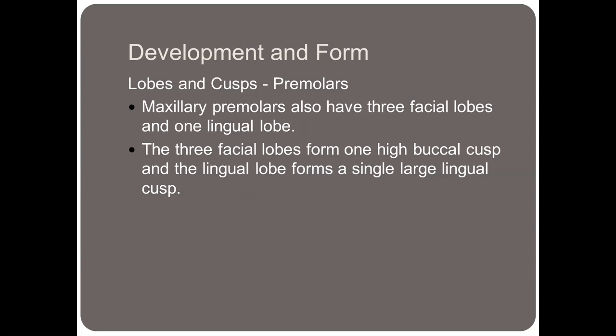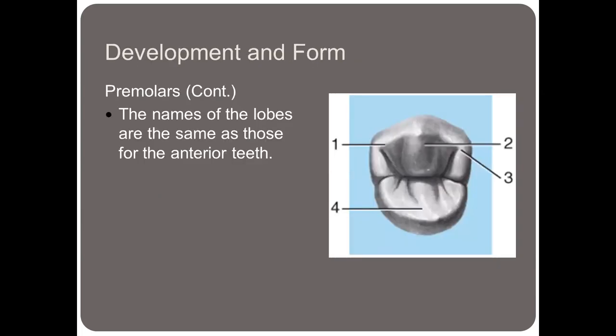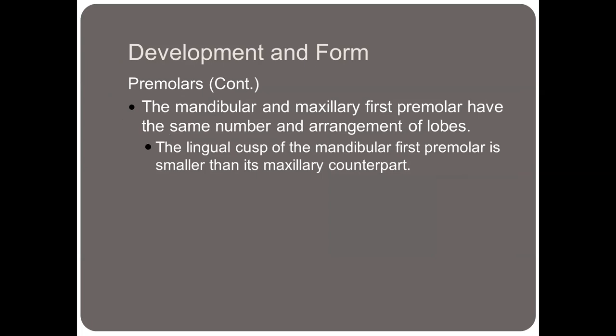For premolars, the maxillary premolars also have three facial lobes and one lingual lobe. The three facial lobes form one big high buccal cusp, and the lingual lobe forms a single large lingual cusp — a cusp instead of a cingulum. So the first premolar has four lobes: three on the buccal, one on the lingual. The names are the same as with the anterior teeth: mesiofacial, centrofacial, distofacial, and lingual as number four. The mandibular and maxillary first premolar have the same number and arrangement of lobes, though the lingual cusp of the mandibular first premolar is smaller than its maxillary counterpart.